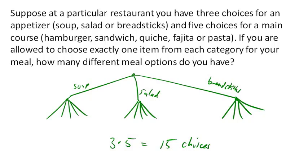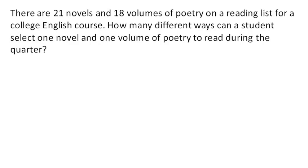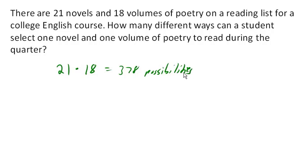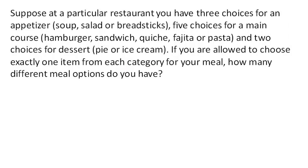Suppose there are 21 novels and 18 volumes of poetry on a reading list. How many different ways can you select one novel and one volume of poetry? There are 21 choices for the novel and 18 for the poetry. Multiplying those gives 378 possibilities. Now suppose the restaurant has three choices for the appetizer, five for a main course, and two for dessert. Choosing one of each gives 3 times 5 times 2 equals 30 choices.